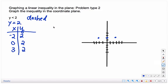And then we're going to go ahead and graph that line. And it's going to be dashed, remember, because there's no equal to part in your inequality.